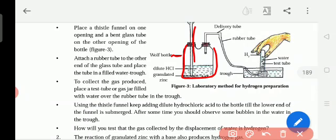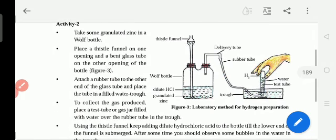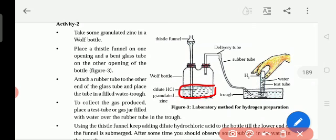On top is a thistle funnel and it is the delivery tube. It is test tube and it is the trough. So here what they have done, they have taken the zinc granules, granulated zinc. Zinc is the metal. When the acid or base reacts with the metal, they liberate the hydrogen gas.